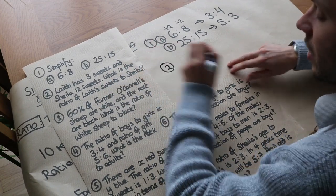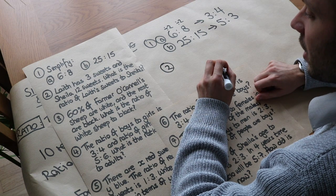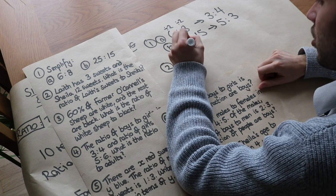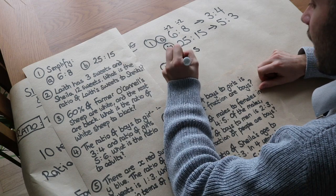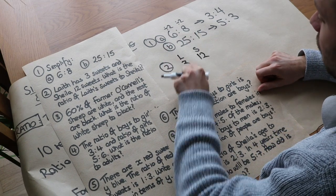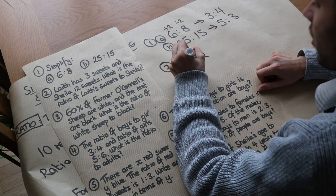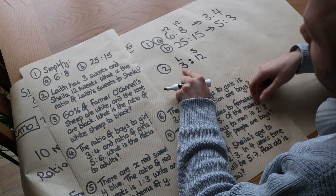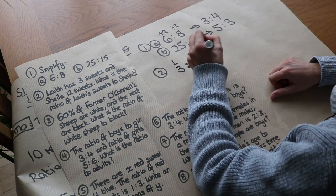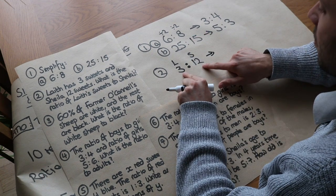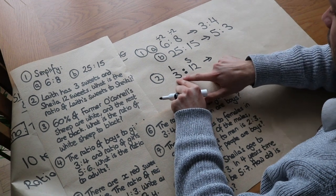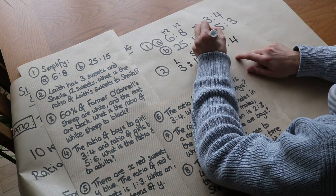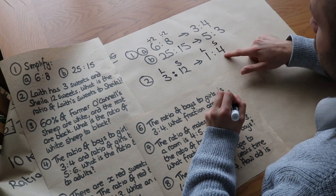What about the second question? Leif has three sweets and Sheila 12 sweets — what is the ratio of Leif's sweets to Sheila's? Well, Leif has three sweets and Sheila 12. You could write that as a ratio: for each three sweets that Leif has, Sheila has 12 sweets. So then I could simplify this ratio — they both divide by three: three divided by three is one, and 12 divided by three is four. So that's saying for each one sweet that Leif has, Sheila has four sweets.